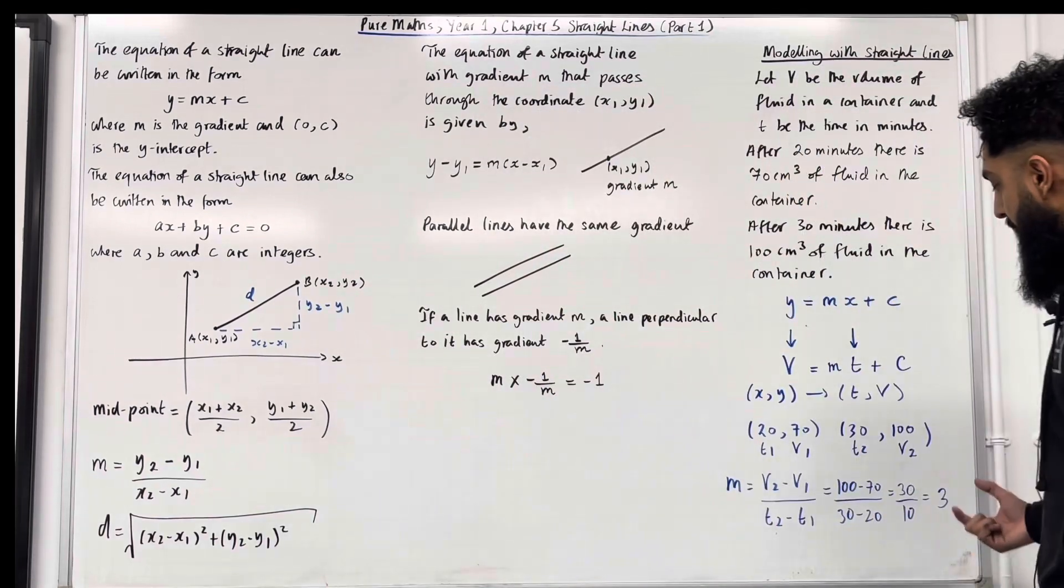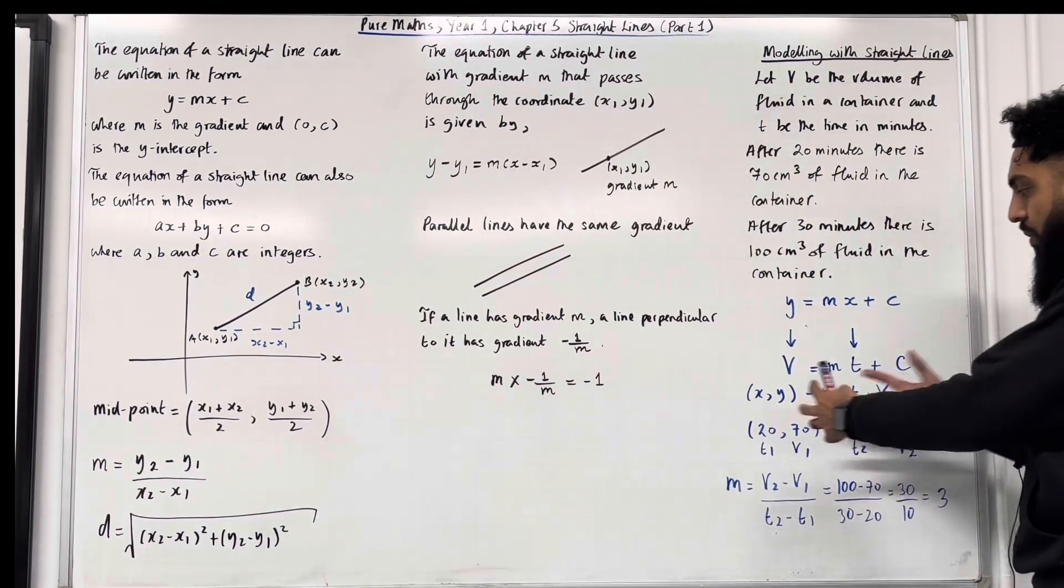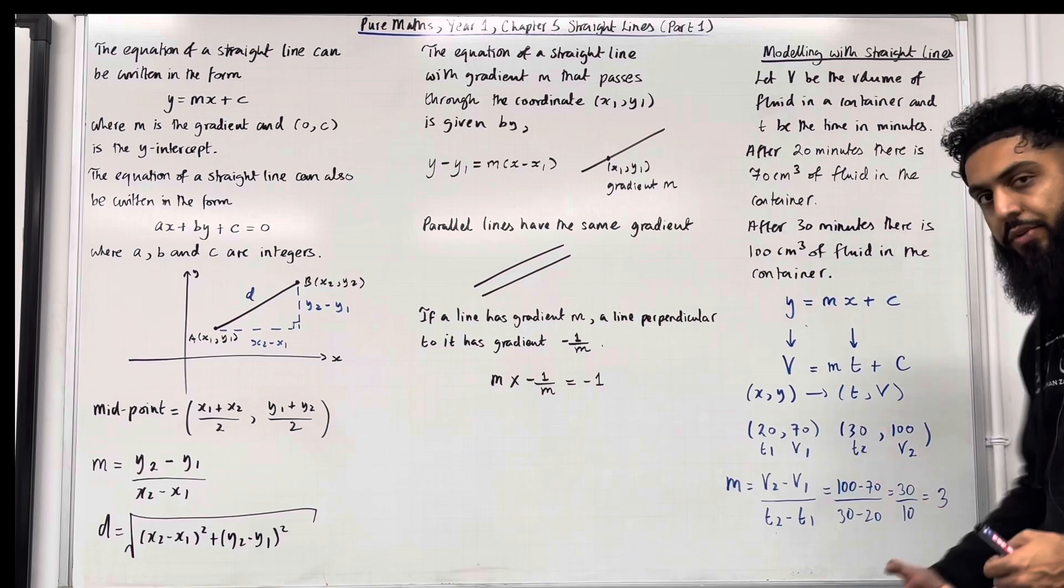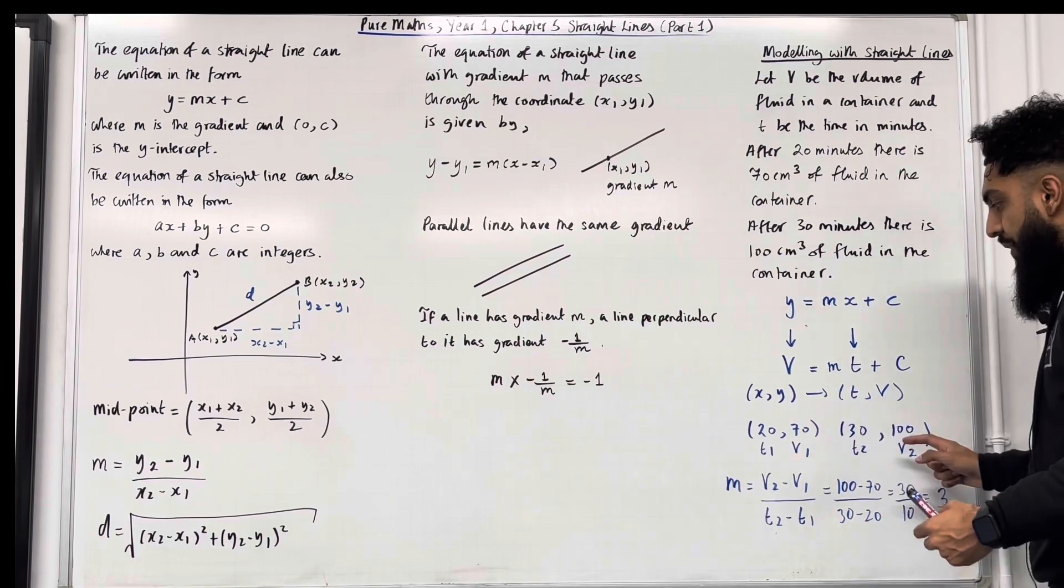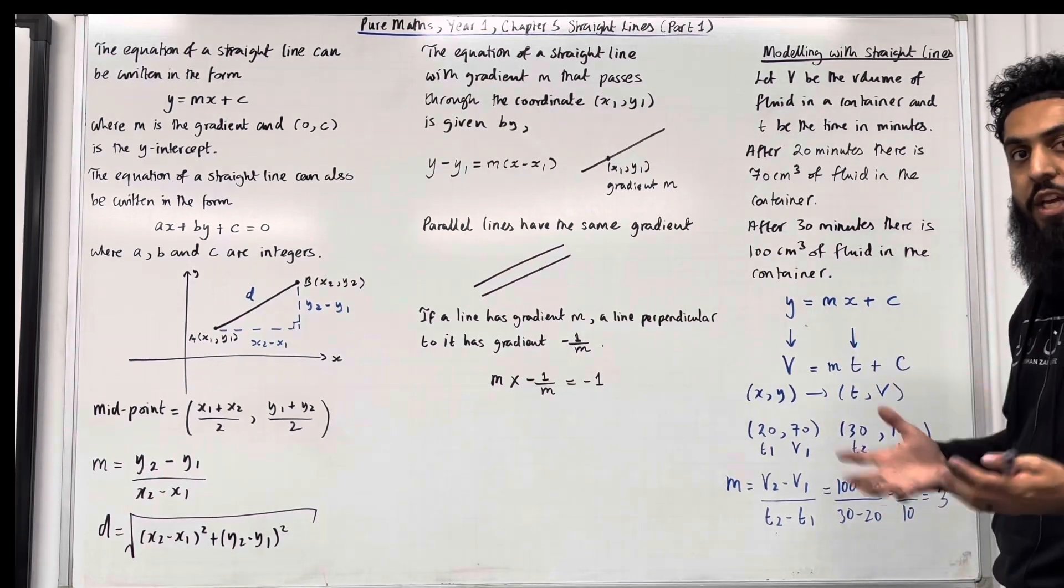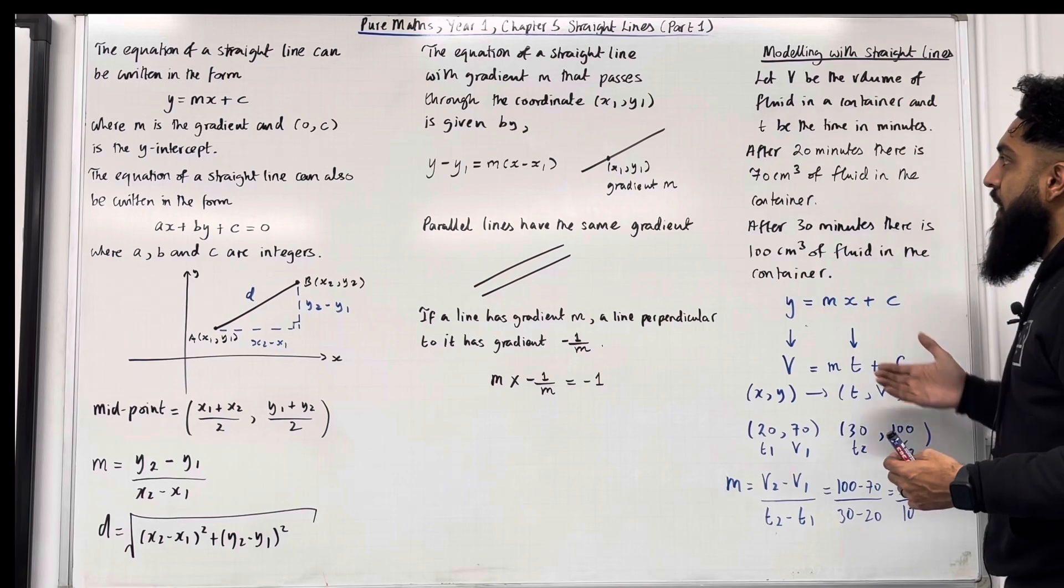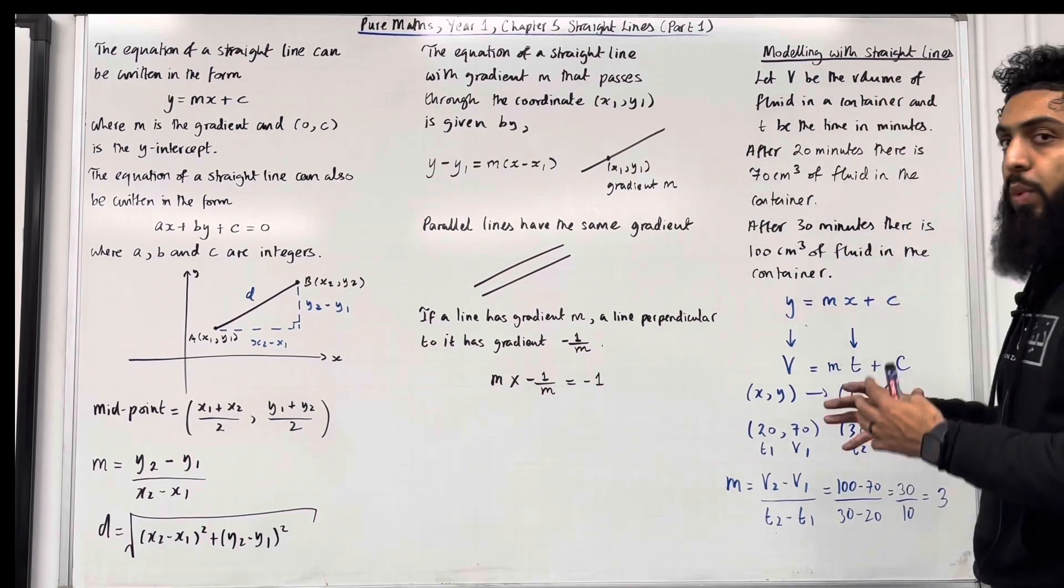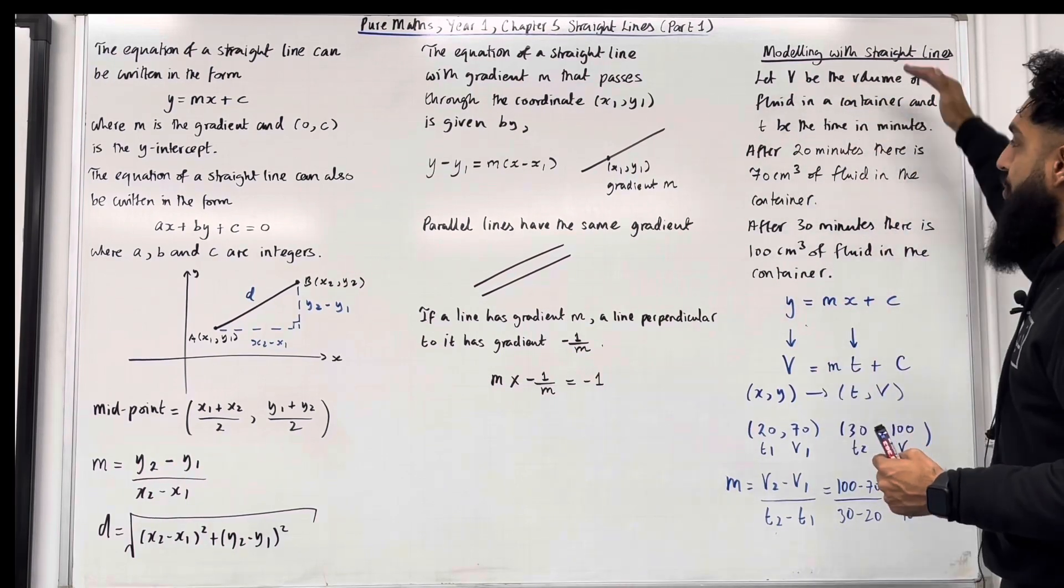Now that I've got the gradient and I've got two coordinates, I can use the gradient and one of these two coordinates to work out the equation that will model this particular scenario. So that there is just one example of modelling with straight lines.